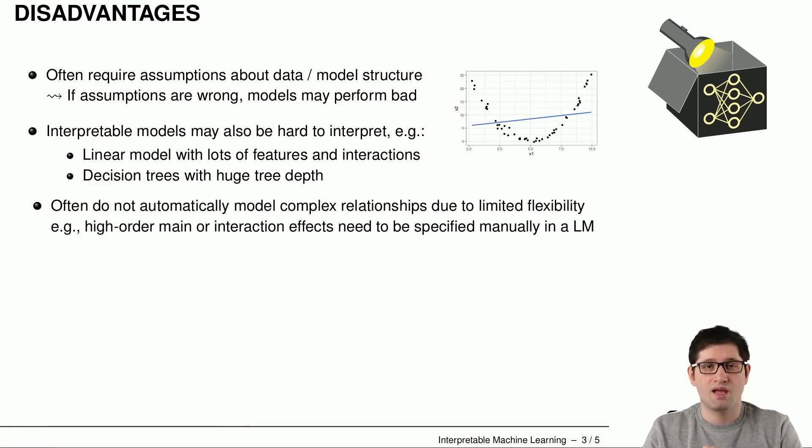Another disadvantage is that inherently interpretable models often do not automatically model complex relationships because they are themselves limited with respect to flexibility, like linear regression models are limited by definition to estimate only linear effects. And if you want to include higher order effects like quadratic or cubic or interactions between multiple features, you need to specify it manually. So you need to tell the linear regression model, please don't only use main effects, please also use quadratic effects for certain features and also which higher order effects and interactions it should consider. And this is inconvenient because it cannot be automated and things are getting more complicated.